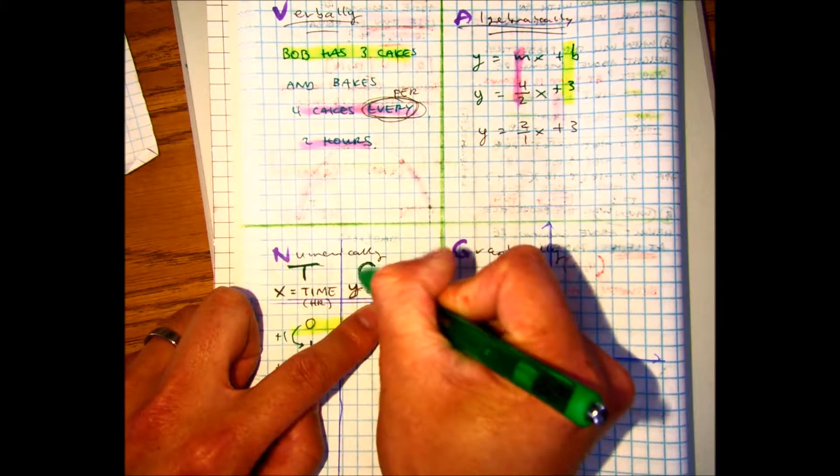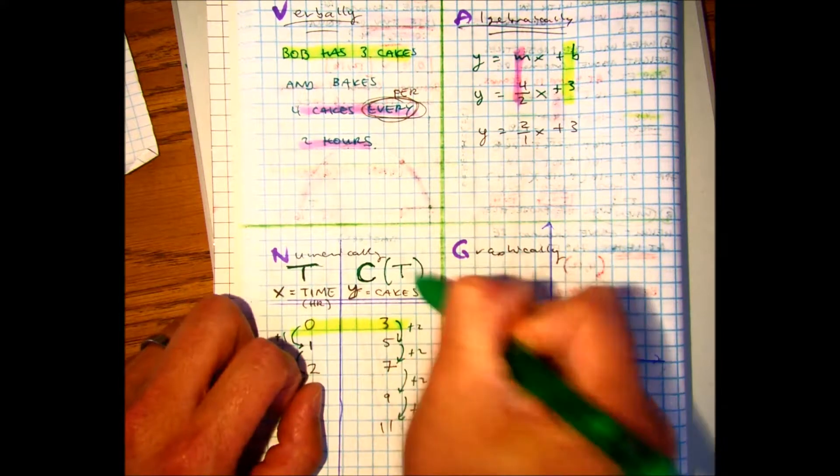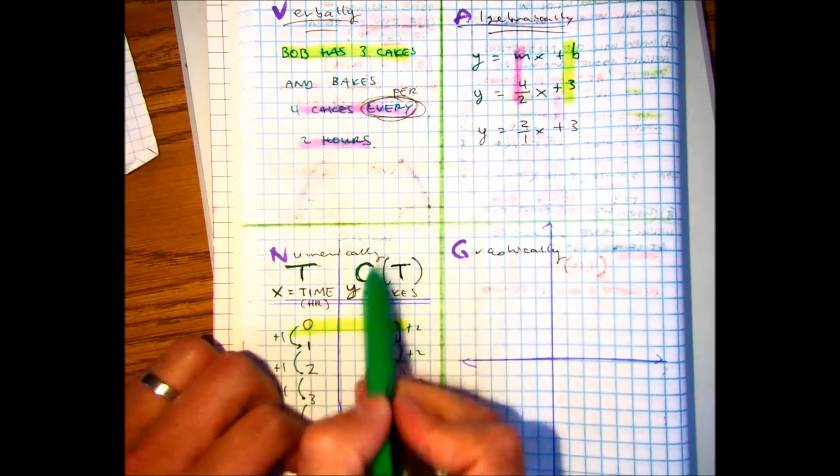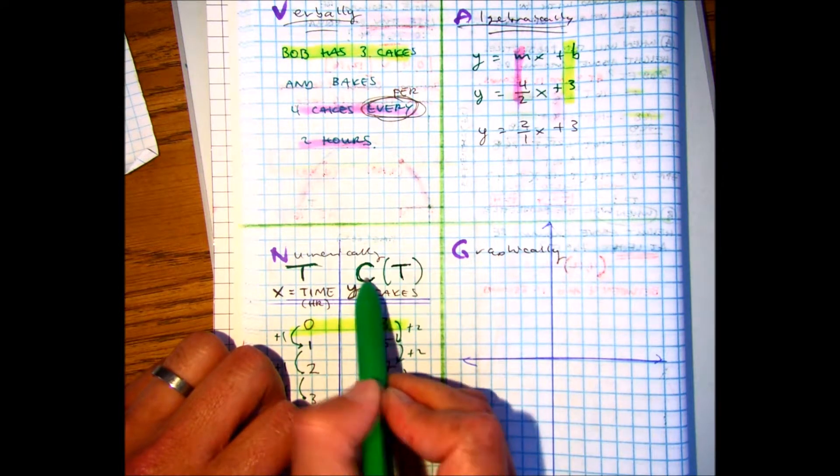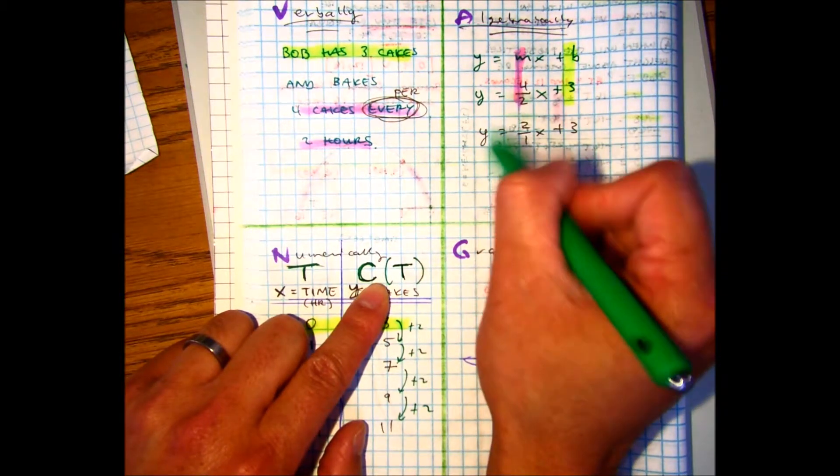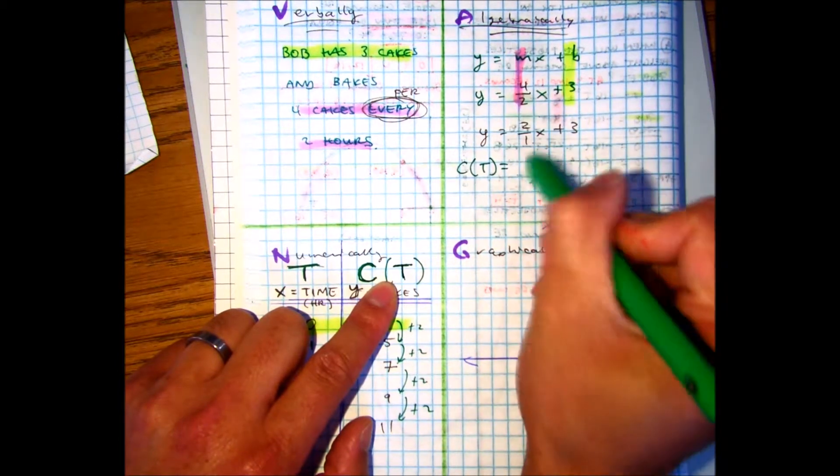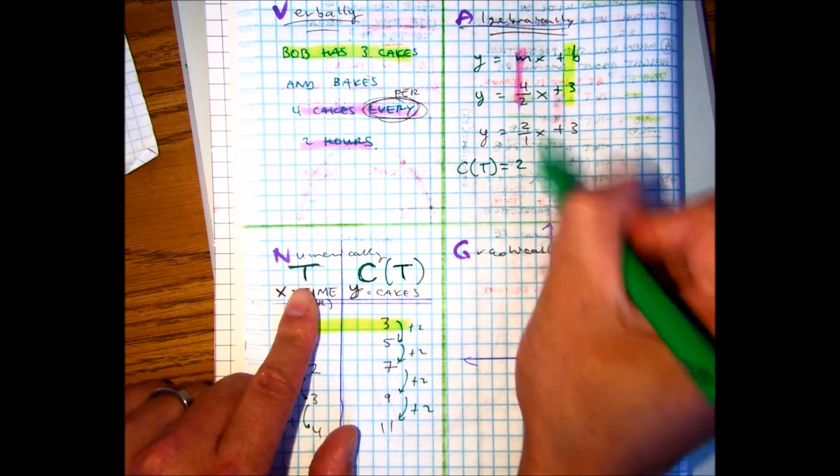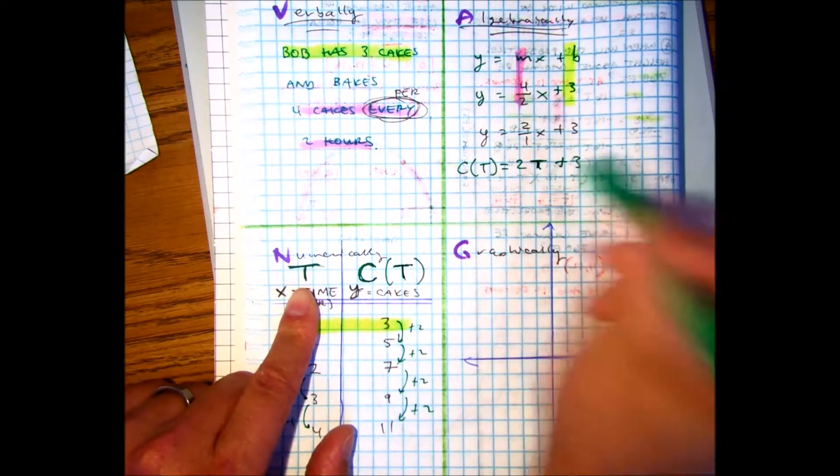But watch this. I'm going to change the c to be c of t. Everyone say that. C of t is function notation. The number of cakes is a function of time. So instead of writing y, we're going to write what? C of t equals two times... X or t? T plus three.